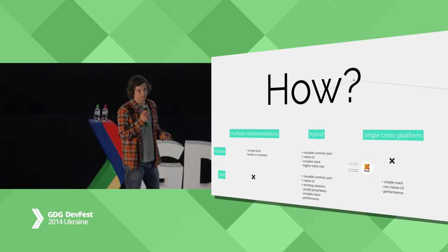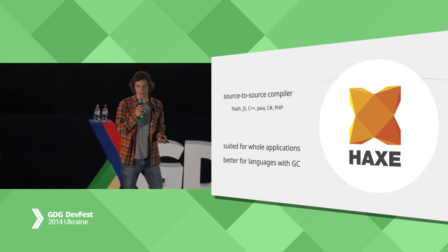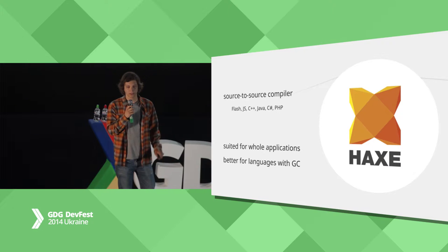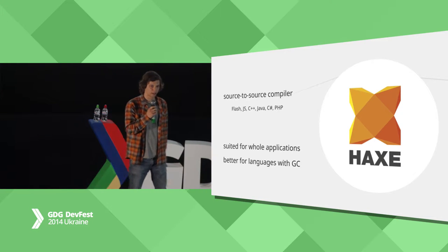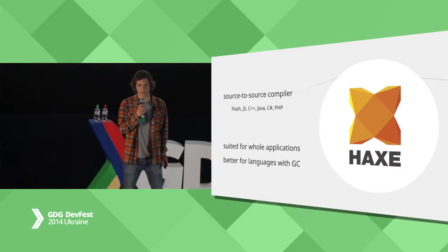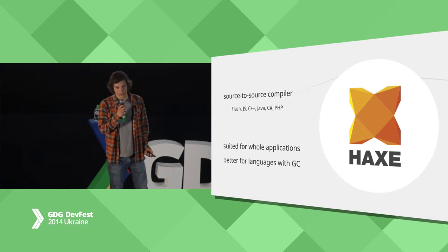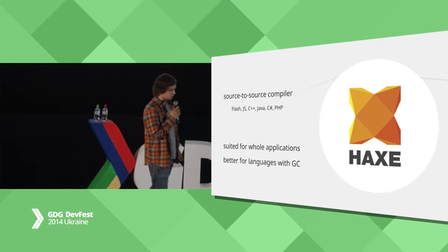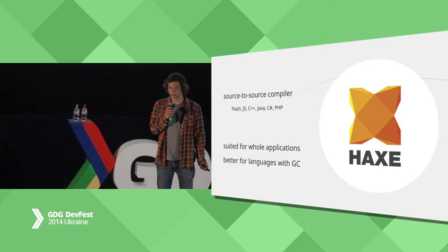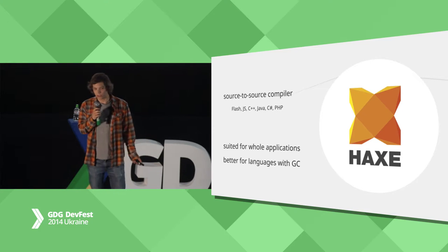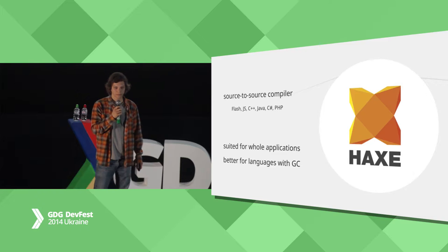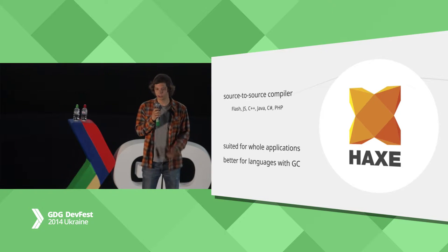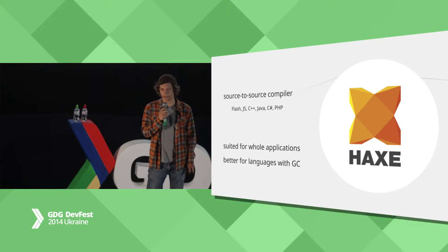We went with the VM solution the first time using Haxe — a source-to-source compiler based on ECMAScript that outputs Flash, JavaScript, C++, and other languages. It was quite good for us at first because it targeted all the platforms we wanted. But because it is based on ECMAScript, we had performance issues — for native code, this means you need to implement a garbage collector. Also, it was mainly meant for writing the whole application from scratch in Haxe, so it was quite hard to mix it with already existing applications.